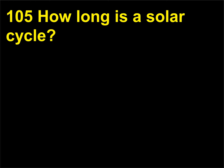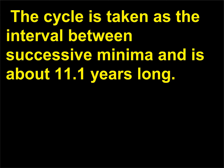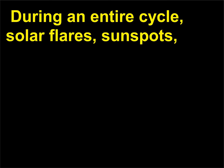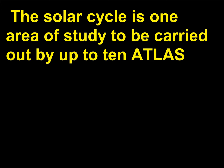How long is a solar cycle? The solar cycle is the periodic change in the number of sunspots. The cycle is taken as the interval between successive minima and is about 11.1 years long. During an entire cycle, solar flares, sunspots, and other magnetic phenomena move from intense activity to relative calm and back again.